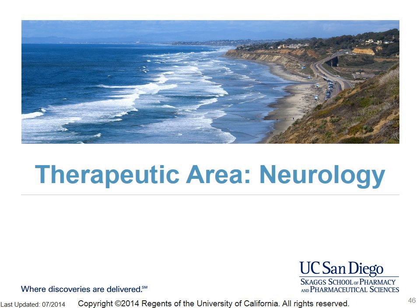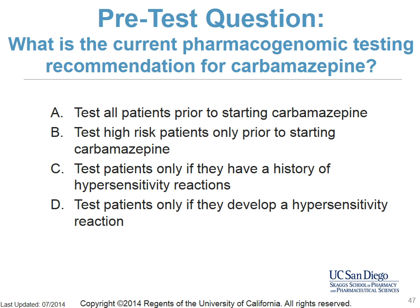The final example of pharmacogenomic testing is from the area of neurology. What is the current pharmacogenomic testing recommendation for carbamazepine? Options are: A, test all patients prior to starting carbamazepine; B, test high-risk patients only prior to starting carbamazepine; C, test patients only if they have a history of hypersensitivity reactions; or D, test patients only if they develop a hypersensitivity reaction.